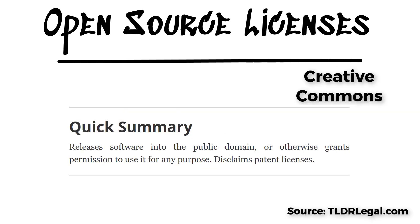The final one we're going to discuss today is Creative Commons. Creative Commons is actually a number of different licenses. The description for the Creative Commons CC0 — the top-level one — is: release software into the public domain or otherwise get permission to use it for any purpose. Disclaim patent licenses. Basically, you can't use a trademark, can't hold a liability, and there are patent claim considerations. I'm not sure exactly what they mean on that last one.